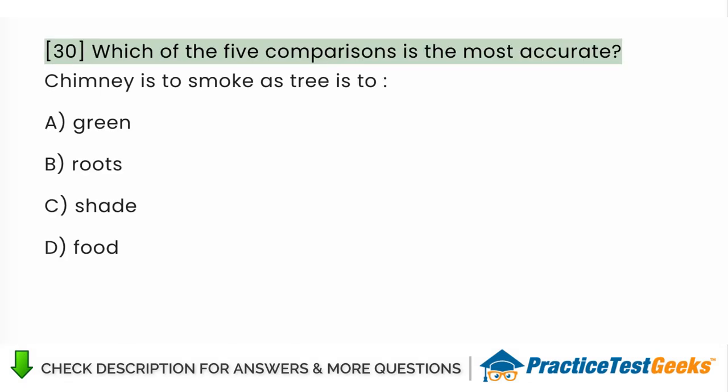Which of the five comparisons is the most accurate? Chimney is to smoke as tree is to A. Green B. Roots C. Shade D. Food